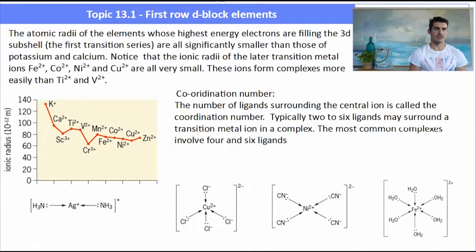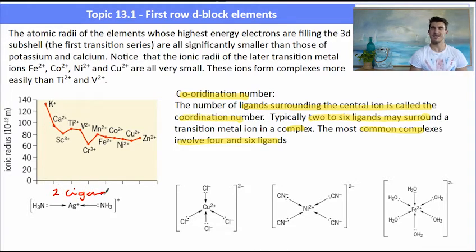Moving further on from the ligands we need to talk about coordination number. Now coordination number is the number of ligands that surrounds the metal ion. So the metal ion is generally surrounded by between two and six ligands in a complex but most of the time we can have two, four or six.